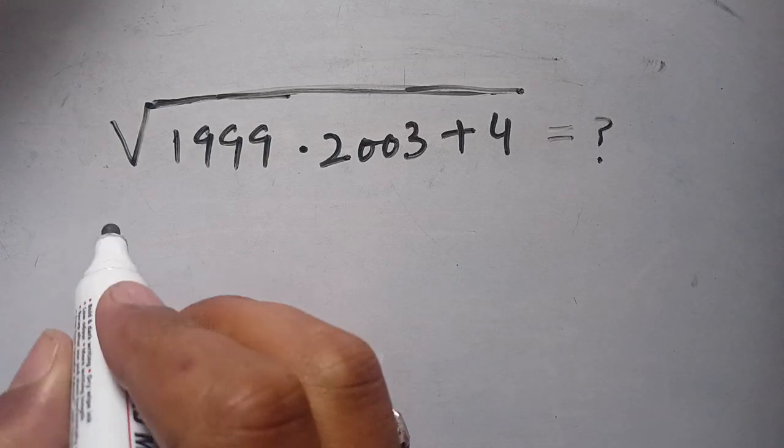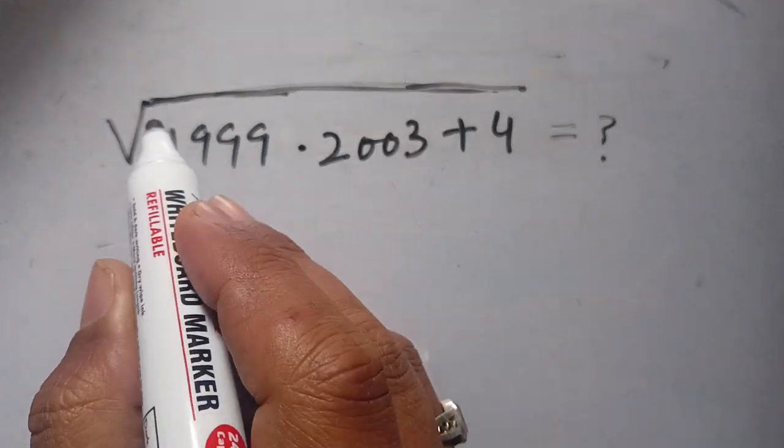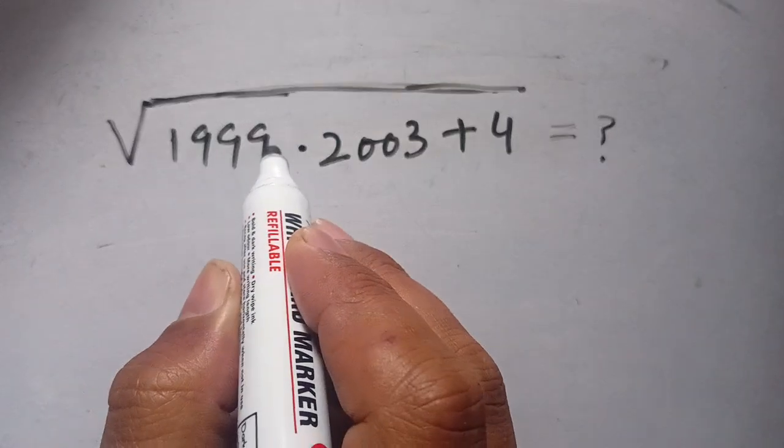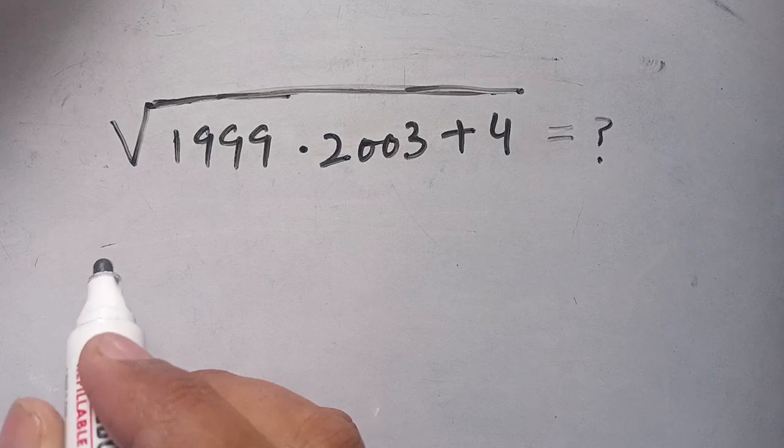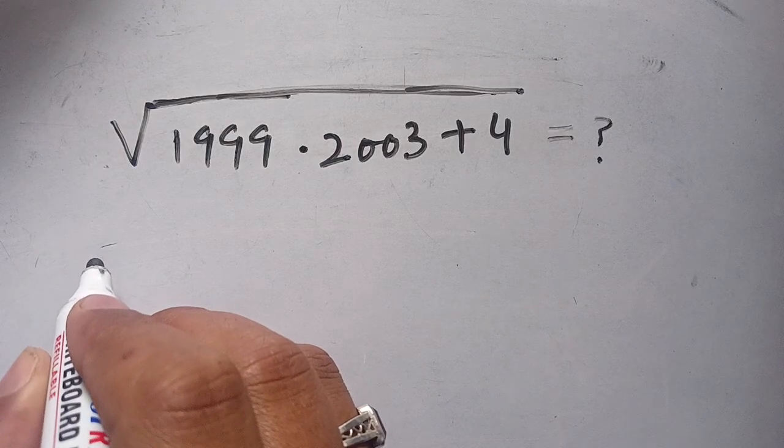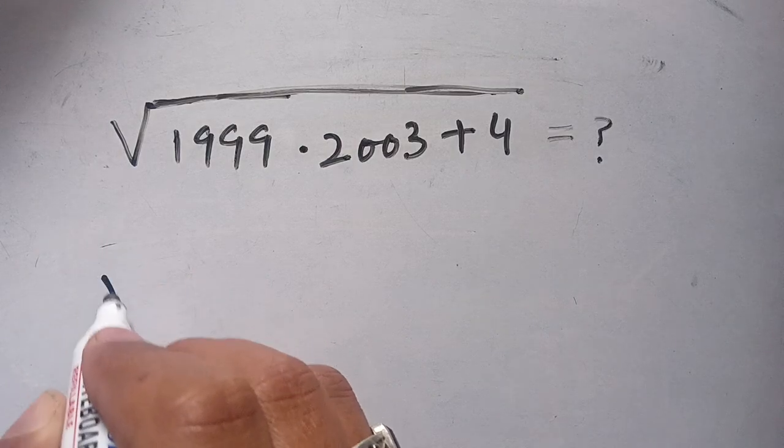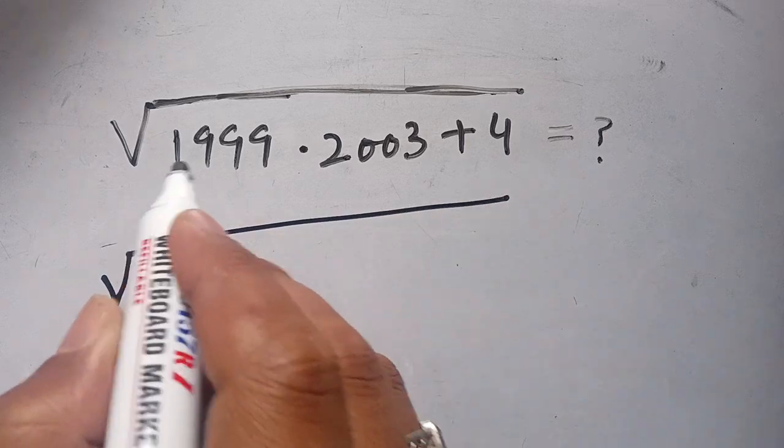Hello everyone, in today's video we are going to solve this square root problem: √(1999 × 2003 + 4) without using any calculator. Let us solve this. First of all, we write this square root of 1999.